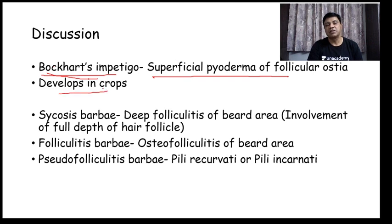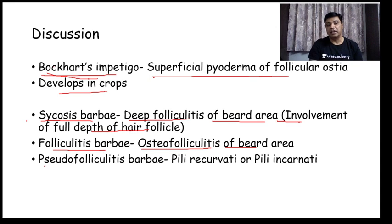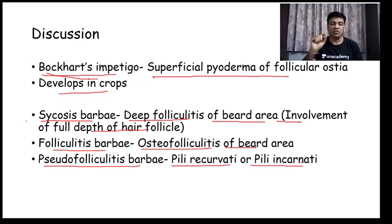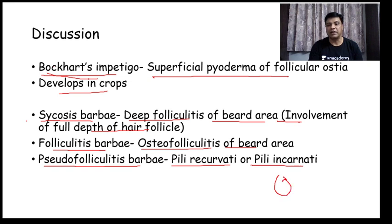In the beard area there are three types of bacterial infection. First is sycosis barbae — deep folliculitis of the beard area involving the full depth of the hair follicle. Second is folliculitis barbae — osteofolliculitis of the beard area. Third is pseudofolliculitis barbae, also called pili recurvati or pili incarnati — the hair comes out of the follicular ostium only to turn around and re-enter the same follicular ostium.